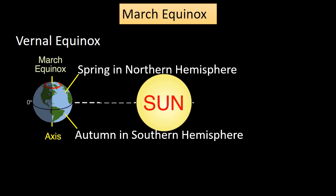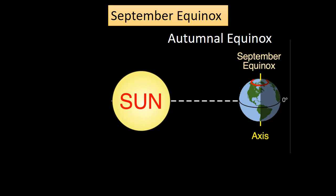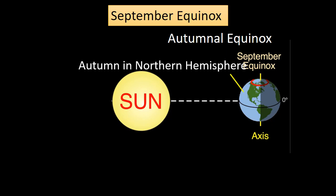Now let's understand the September equinox. The September equinox, also known as the autumnal equinox, is a moment in time when the tilt of the Earth's axis is not inclined towards or away from the sun, resulting in equal amounts of daylight and darkness for all parts of the Earth. It usually occurs on September 22nd or 23rd.